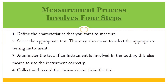The measurement process involves four steps. One: define the characteristics that you want to measure. Two: select the appropriate test — this may also mean to select the appropriate testing instrument. Three: administer the test; if an instrument is involved, this also means to use the instrument correctly. Four: collect and record the measurement from the test.